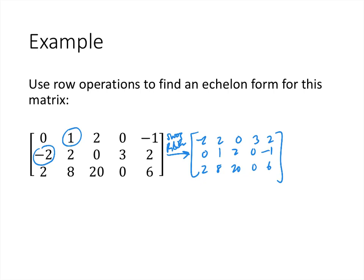Another condition says that all entries in a column below a leading entry must be zeros. In this first column, we already have a zero in the second row, but we need to make the entry in the third row first column a zero. We're going to do that using the replacement operation. We want to use the leading entry to get zeros underneath it, so we'll replace row three by row three plus row one, which will give us a zero in that first position.